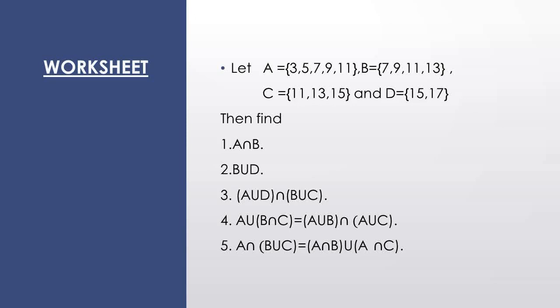And for the right-hand side, first आप A union B निकालेंगे, then आप A union C निकालेंगे, then you will find the intersection. सबसे पहले brackets solve होती है. Similarly, you will solve the 5th part. We will solve this worksheet today based on the operations — union and intersection of two sets.